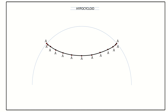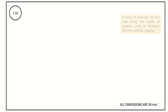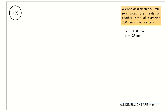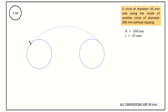We will see how to measure the angular dimensions. The given data: capital R equals 100 mm (radius of the bigger circle) and small r equals 25 mm (radius of the smaller circle). The arc length AA equals 2πr equals 157.07 mm. Since we cannot measure 157.07 mm for an arc length, we go for angular measurement.